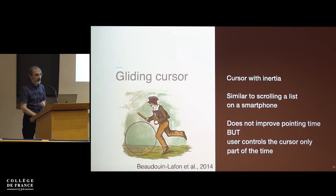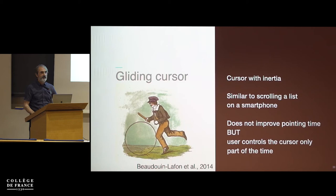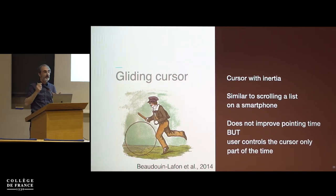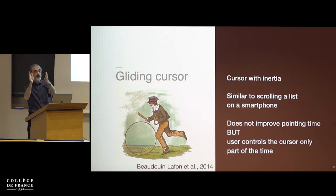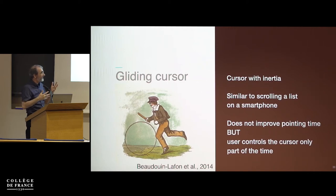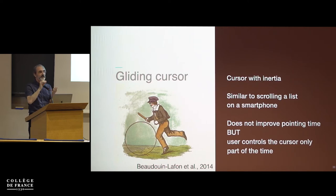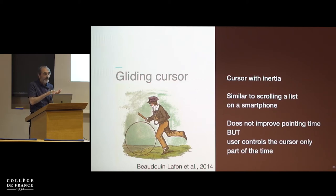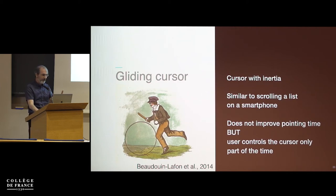Another idea was inertial cursor — similar to inertial scrolling on a smartphone. When controlling a cursor with a trackpad and you lift your finger, depending on speed at liftoff, the cursor continues by itself. You can stop it, redirect it — like pushing a hoop as a child. Interestingly, it does not improve pointing time, but it gives a different feeling — like pushing the cursor rather than being in control all the time. It means the same amount of information is transmitted in less active control time, and there's something to explore here if coupled with other methods.